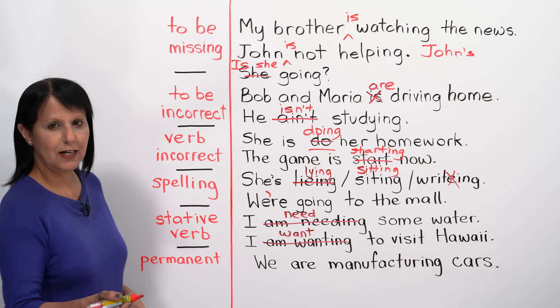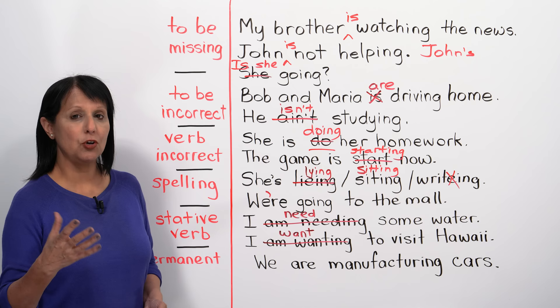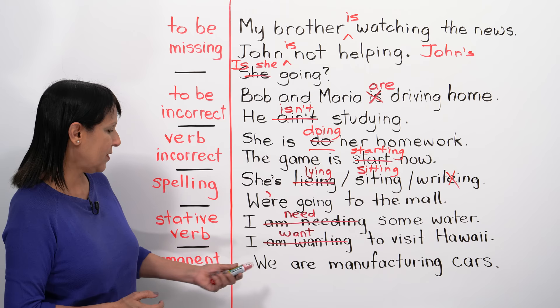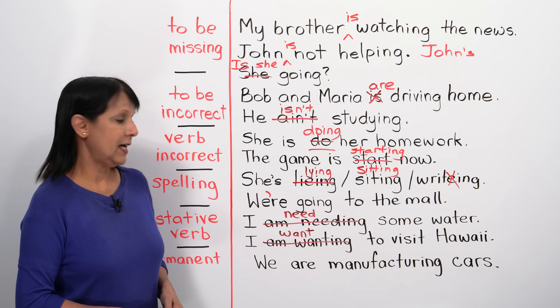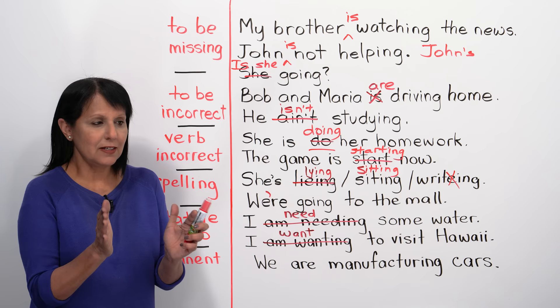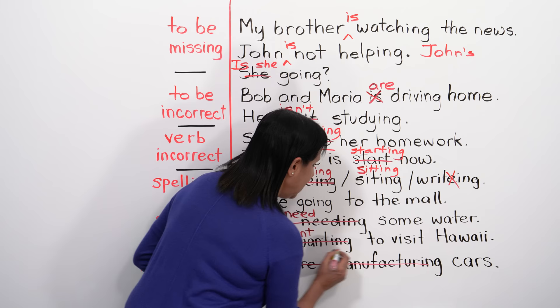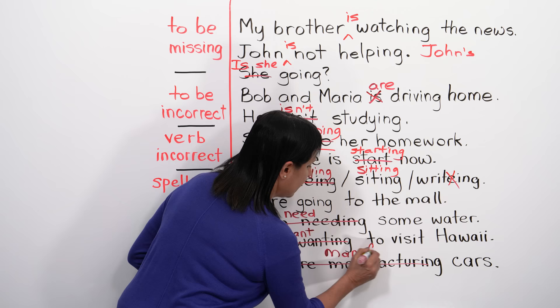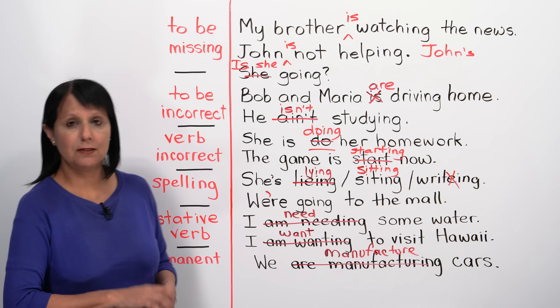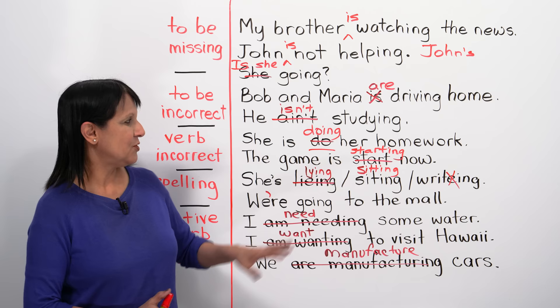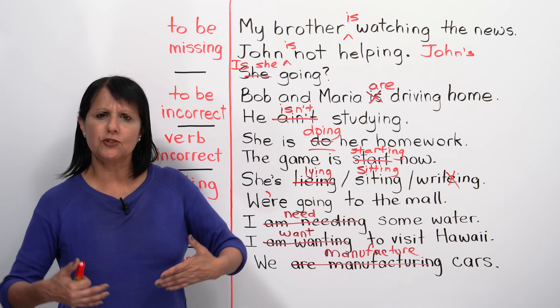Finally, remember we should not use this tense to talk about permanent situations. For example, if someone asks 'What does your company do?' and the answer is 'We are manufacturing cars' — that's wrong, because it's not temporary. You should say 'We manufacture cars' using the present simple tense. Once you know the rules, they actually make it easier for you — they free you to speak and communicate more correctly.